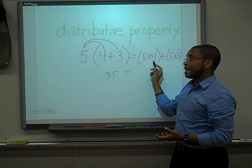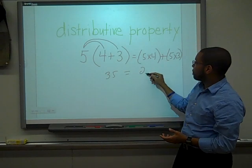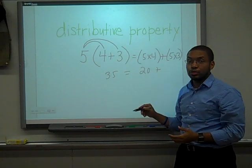Here I have 5 times 4, which is 20, plus 5 times 3, which is 15.